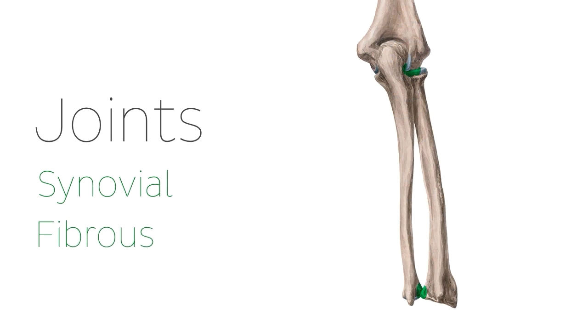Fibrous joints, which unlike synovial joints do not have a joint cavity and therefore are connected by fibrous tissue, such as the syndesmosis of the radio-ulnar joints. Fibrous joints don't allow for a lot of movement.